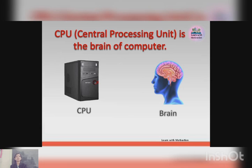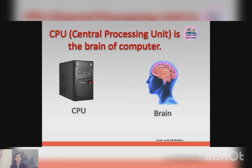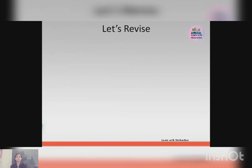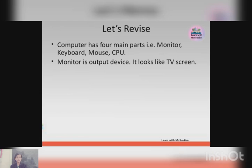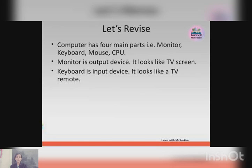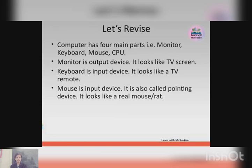Now it's revision time. There are four parts of a computer: monitor, keyboard, CPU, and mouse. Keyboard is an input device and looks like a TV remote. Mouse is an input device, also called pointing device. CPU is the Central Processing Unit and is also called the brain of the computer. Thank you.